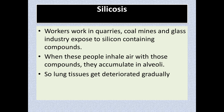Silicosis is also the same kind of disease. Workers who work in quarries, coal mines, the glass industry, or dusty road environments are susceptible to silicosis. Silicon-containing dust particles or rock particles get into the respiratory system and lungs, where they are deposited and accumulated in the alveoli. The lung tissues gradually get destroyed or deteriorate — this condition is known as silicosis.